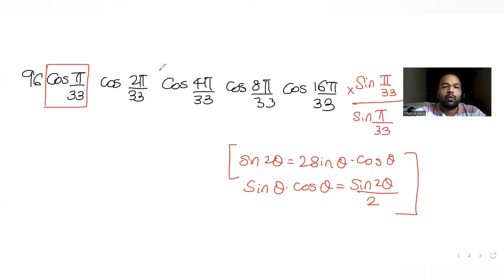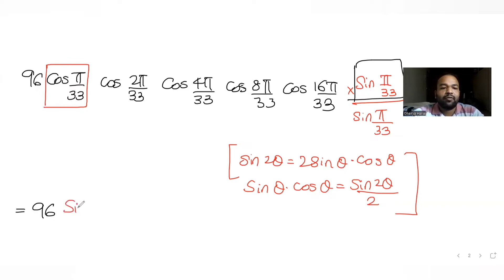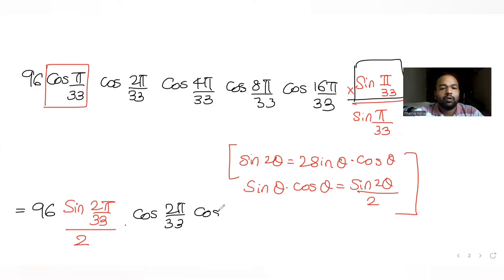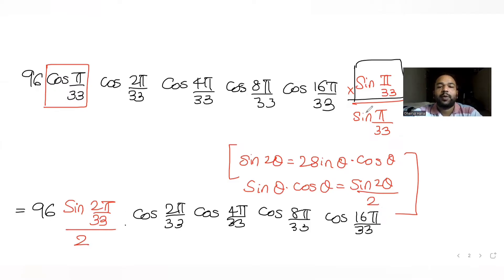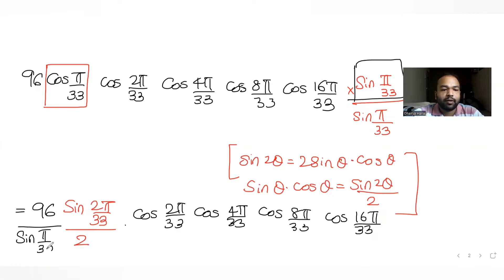Applying the identity to the first cosine term: 96·sin(π/33)·cos(π/33) = 96·sin(2π/33)/2, leaving the remaining terms cos(2π/33)·cos(4π/33)·cos(8π/33)·cos(16π/33) as is, divided by sin(π/33). Cancelling the 2 from 96 gives us 48/sin(π/33).